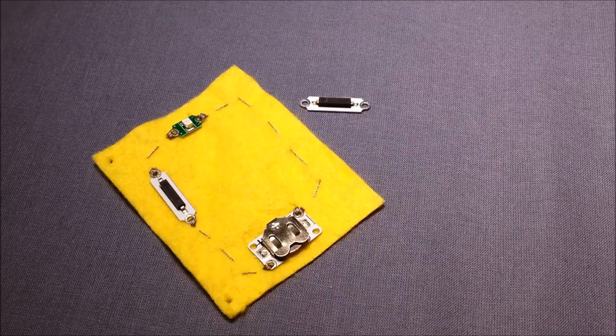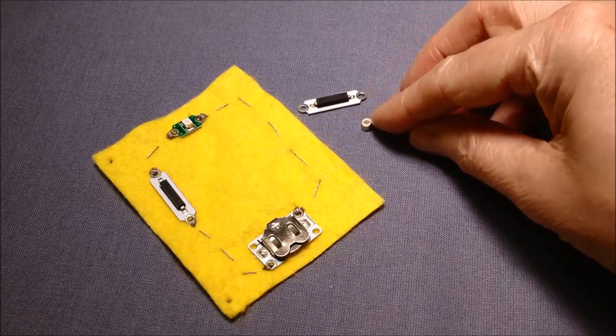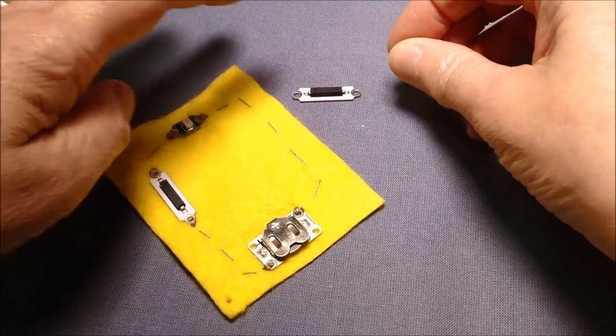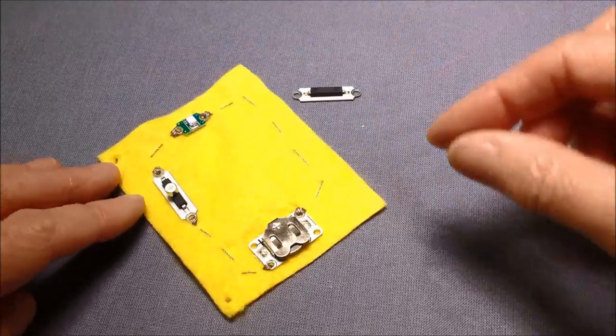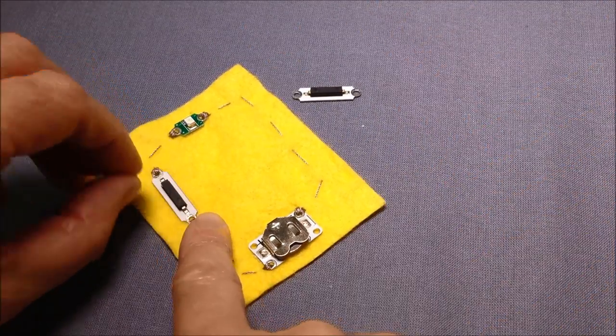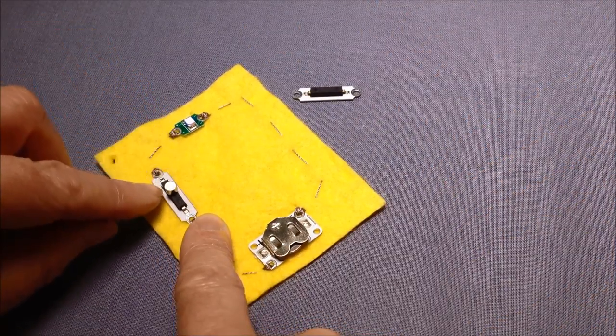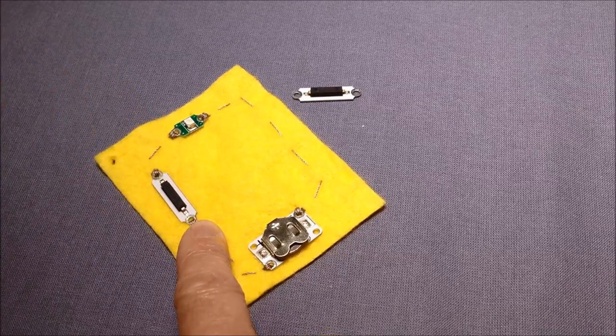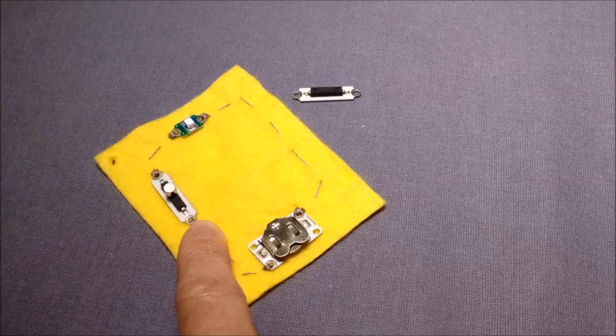This last one is a magnet switch. We have a small magnet that gets attached to the actual switch. If I just put that magnet onto there, we can see the LED lights up. If we take it off, this magnet would go in another part of the product away from the switch. So when the two joined, they light up.